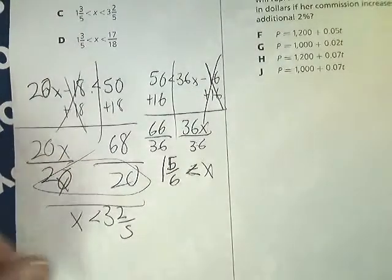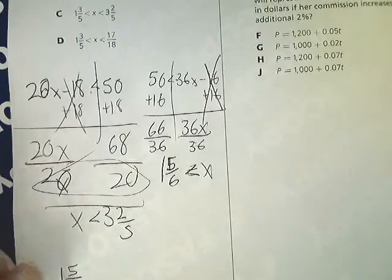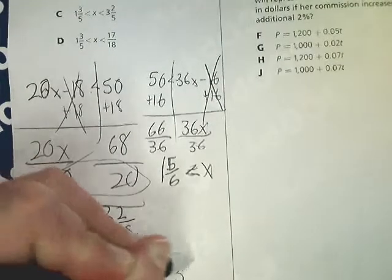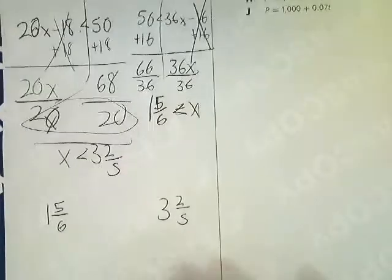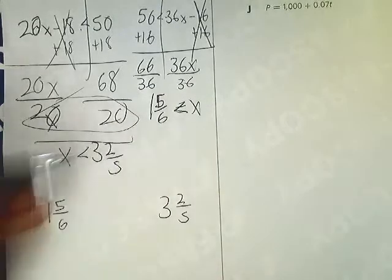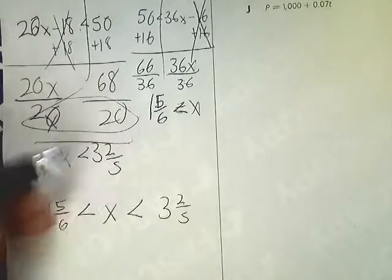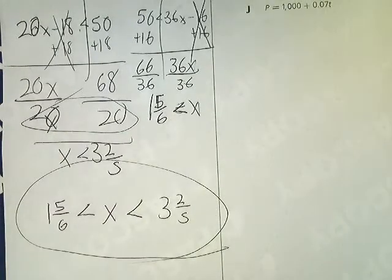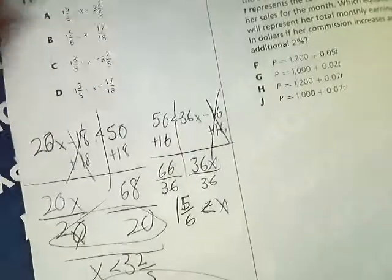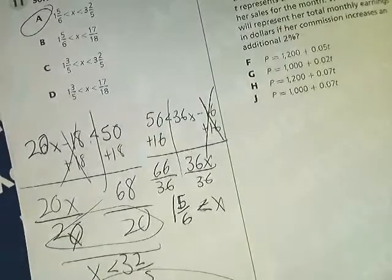Now, I'm going to put the numbers in order. 1 and 5 sixths is less than 3 and 2 fifths. And then I'm going to look at their relationships with x. X is greater than 1 and 5 sixths. So that's good. X is less than 3 and 2 fifths. So it makes a nice little sentence for me. I'm going to go up here and look for the answer. So the answer to number 11 is A.